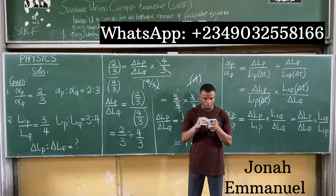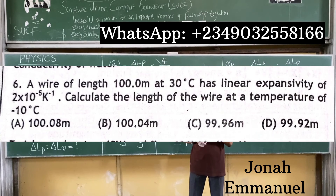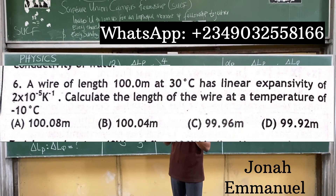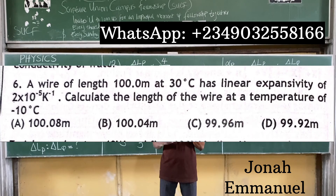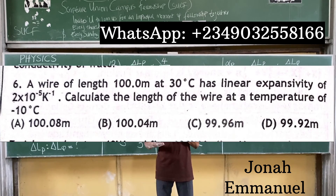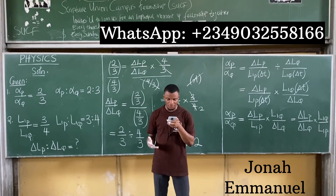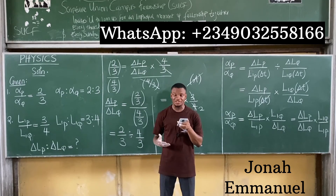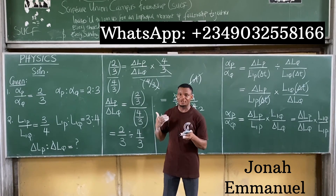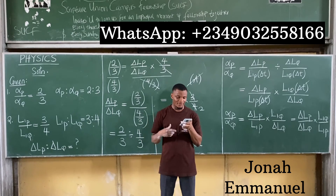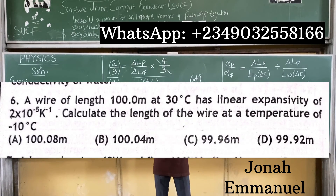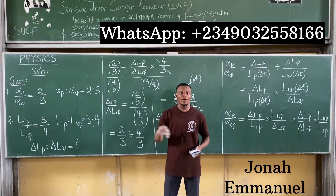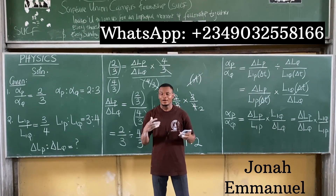Before I go, try this JAM question: a wire of length 100.0 meters at 30°C has a linear expansivity of 2×10⁻⁵ per kelvin. Calculate the length of the wire at −10°C. Since there's a decrease in temperature, the length should be smaller. Solve it and leave your answer in the comment section.